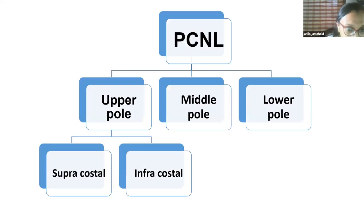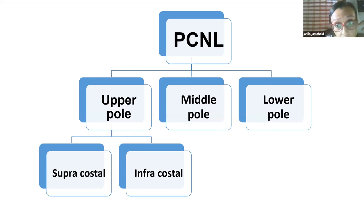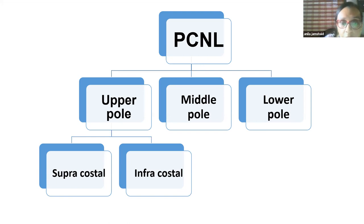PCNL can be done from any approach: from the upper pole, middle pole, and lower pole. For the upper pole, you can go through a supracostal approach — above the 12th rib — or an infracostal approach, which is below the 12th rib.